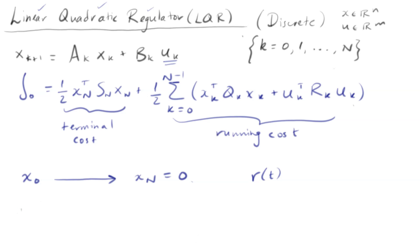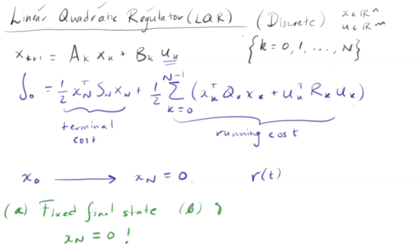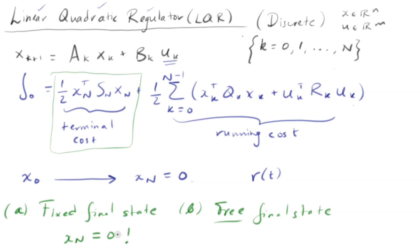We're going to consider two cases. Case one is a fixed final state, which means we're enforcing the constraint that x_N has to be zero. Case two is free final state. The difference is that fixing the final state is an extra constraint on the system. For the free final state, we have to include the terminal cost term, because since we're not fixing that the terminal state has to be zero, we include this term such that when we minimize the cost, this quantity becomes very small so that the final states get close to the origin.